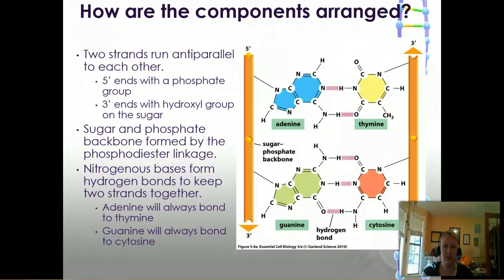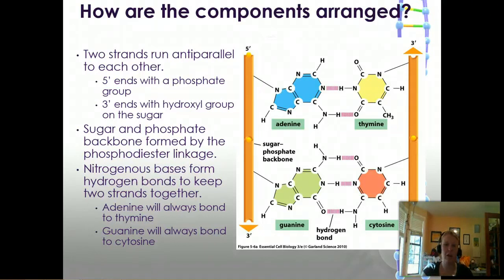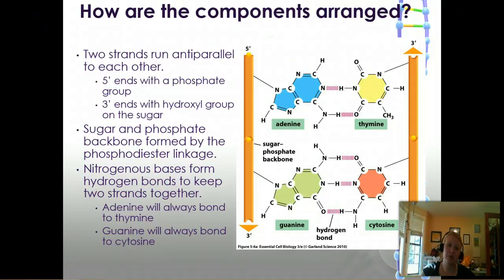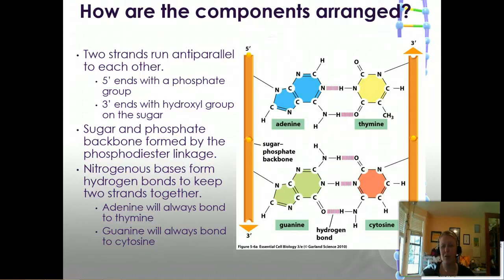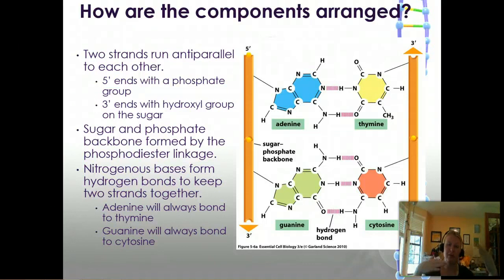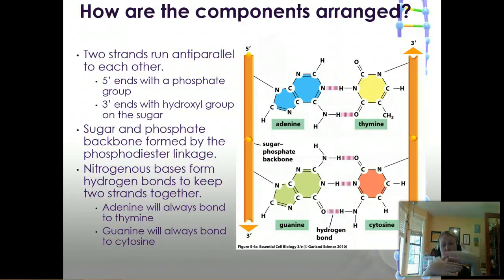So how are the components arranged? As you can see here, we have our sugar-phosphate backbone — remember the sugar in DNA is deoxyribose, whereas the sugar in RNA is ribose, and that's really one of the main differences that separate the two. Those sugars and phosphates in the backbone create the backbone of the DNA. And as you can see here, DNA runs anti-parallel — one side is running in one direction and one side is running in the other, so the sequences are running in opposite directions.